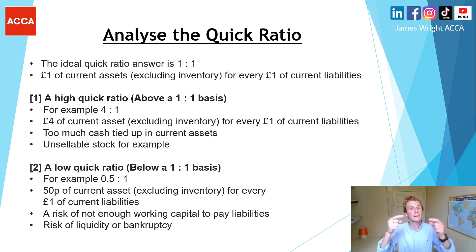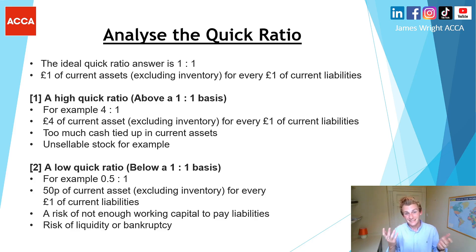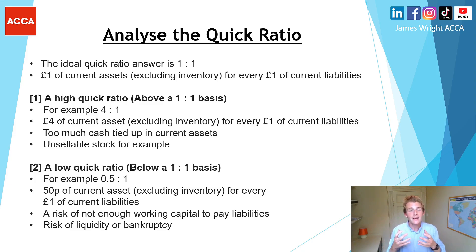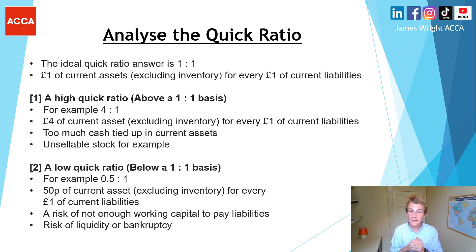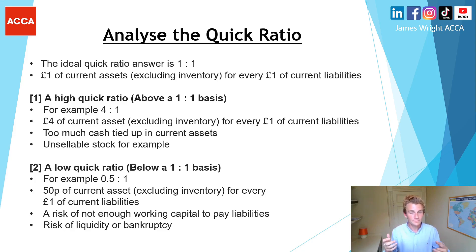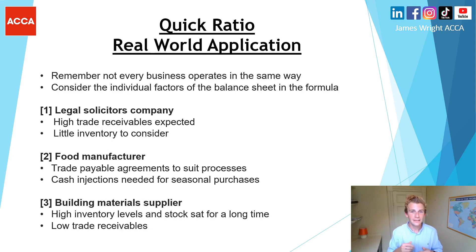On the flip side, a low quick ratio — say 0.5 to one, meaning 50 pence of current assets excluding inventory for every one pound of current liabilities — indicates a big risk. The business may not have sufficient working capital to pay its short-term liabilities. This could lead to a risk of liquidity problems and potential liquidation, and if assets need to be sold, ultimately potential bankruptcy, preventing the business from functioning.